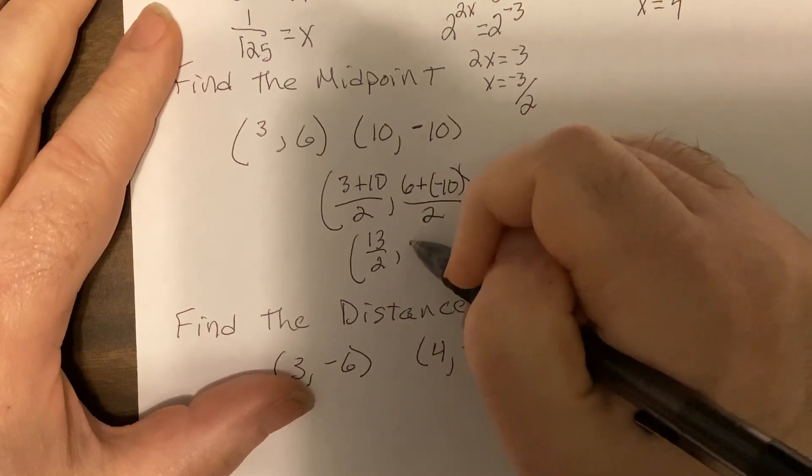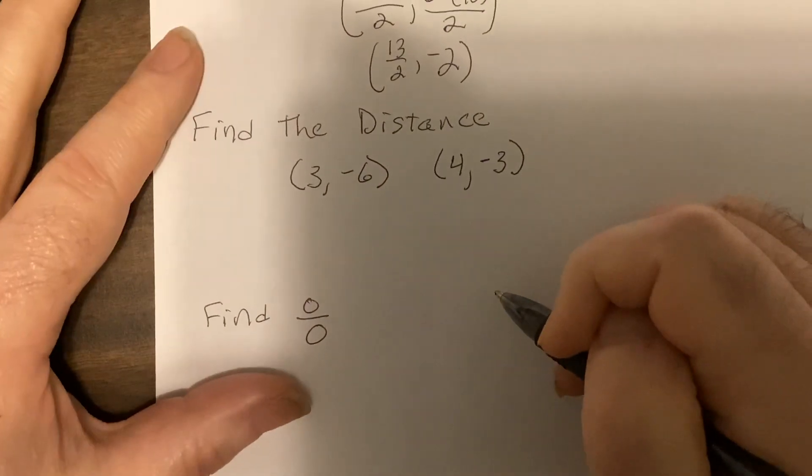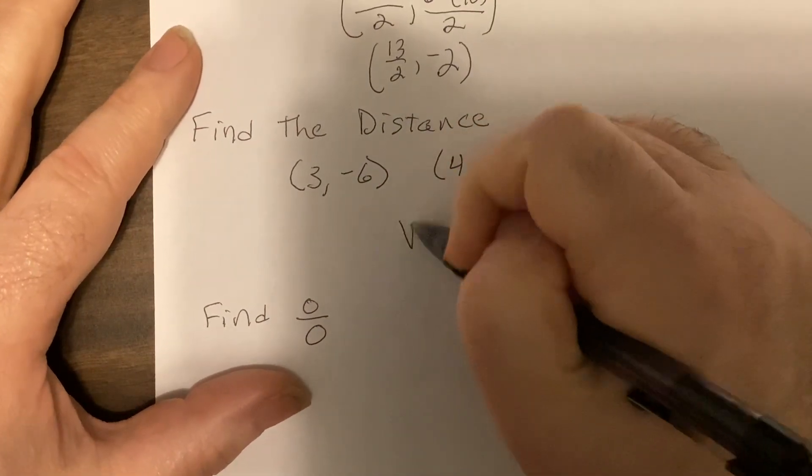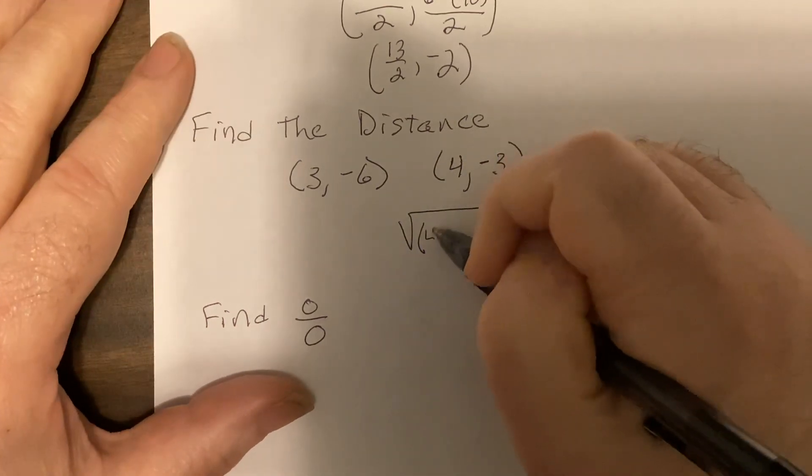negative four over two is negative two. This is the one most people mess up. It's the square root of the difference of the x's, so four minus three...